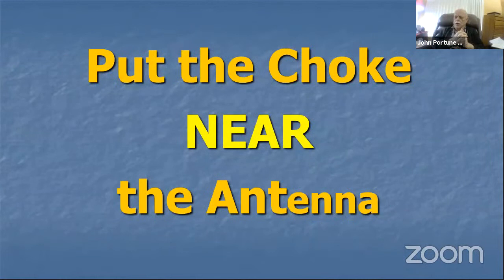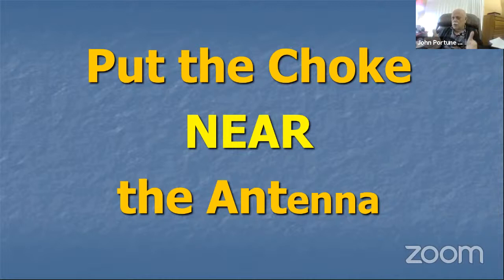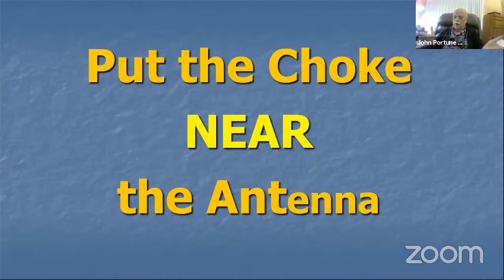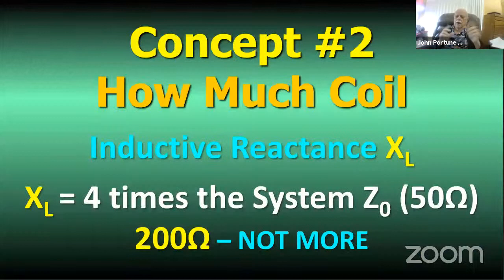Some people ask: where do you put the ferrite chokes? Do you put them just outside your shack? No — where's the problem occurring? Up at the antenna. The balun has to go at the antenna, not down just outside the wall of your shack. You can put one down there if you want, but the one you want is up at the antenna.